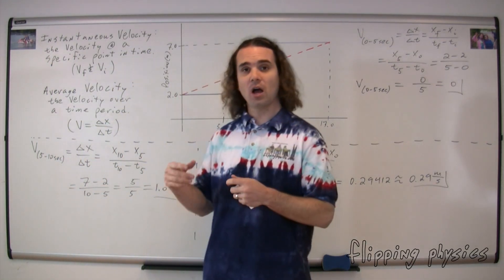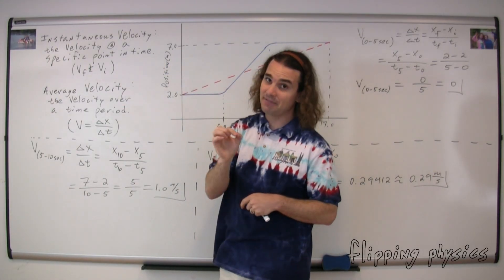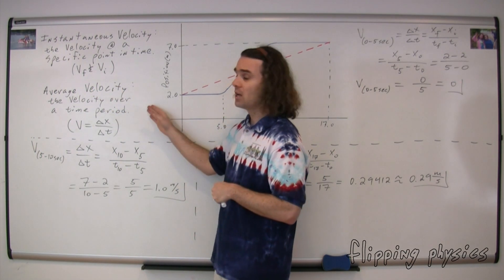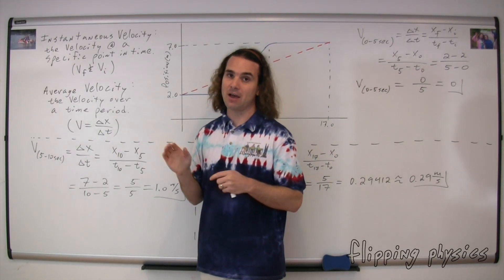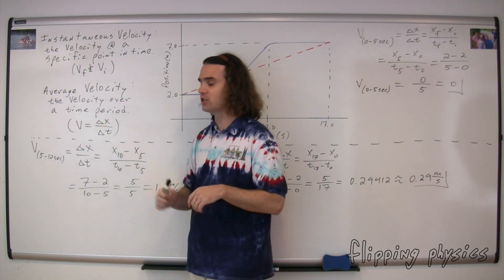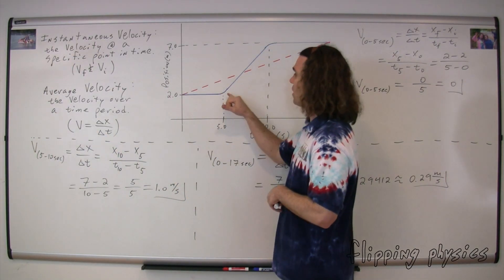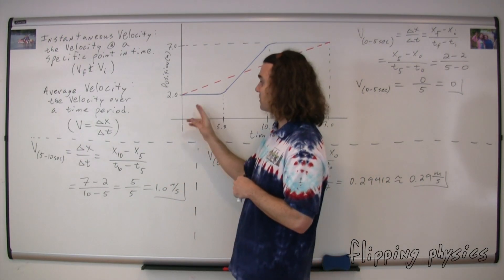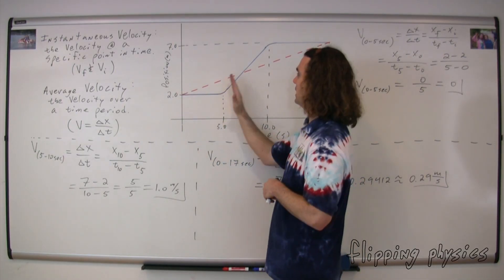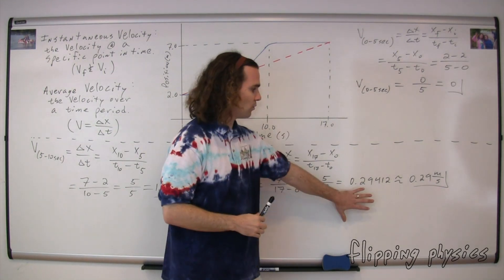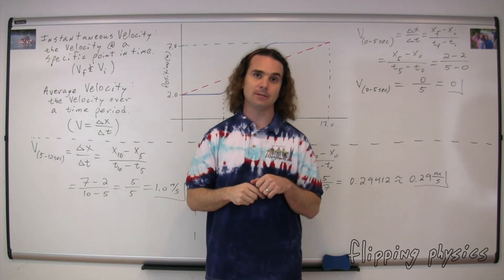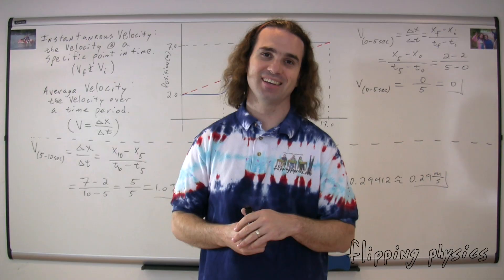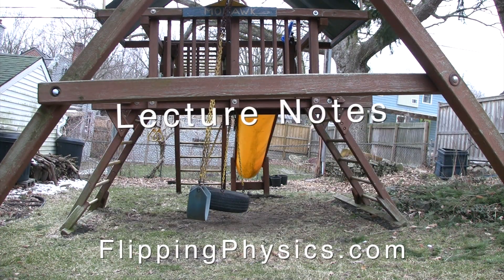Let's do a quick review of the stuff we learned today. Instantaneous velocity is the velocity at a specific point in time. For example, velocity final and velocity initial in our uniformly accelerated motion equations are instantaneous velocities. Average velocity is the velocity over a time period or a time duration. The equation is velocity equals change in position over change in time. We used a graph to show that when you have a constant slope, the average velocity and the instantaneous velocity are going to be the same. However, when the slope changes — for example, all the way from the beginning to the end — the average velocity was not going to be equal to the instantaneous velocity. Ladies and gentle people, I hope you enjoyed learning with me today. Lecture notes are available at FlippingPhysics.com. Please enjoy lecture notes responsibly.